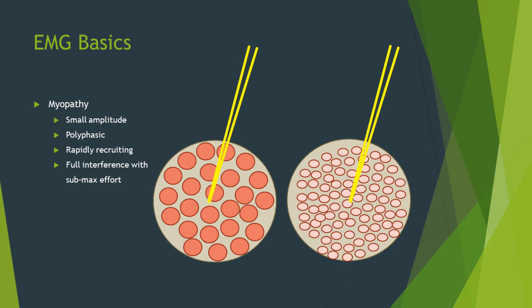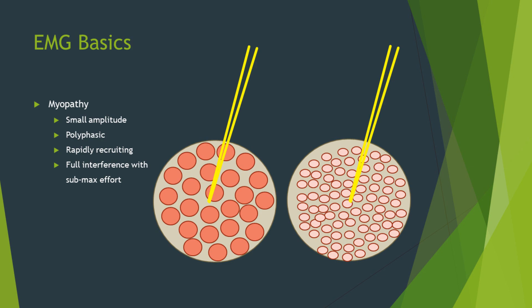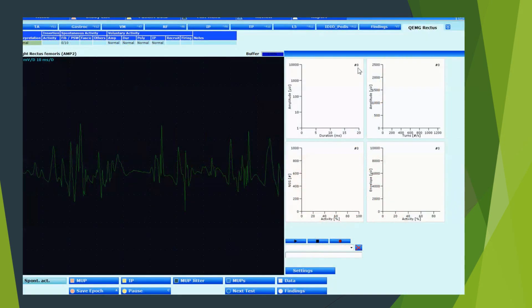The interference pattern therefore becomes very full very quickly, even with submaximal effort, as one loses this orderly recruitment. So in summary, you have small amplitude, polyphasic, rapidly recruiting motor fibers with a full interference pattern with submaximal effort. This is a screenshot of a myopathic EMG.